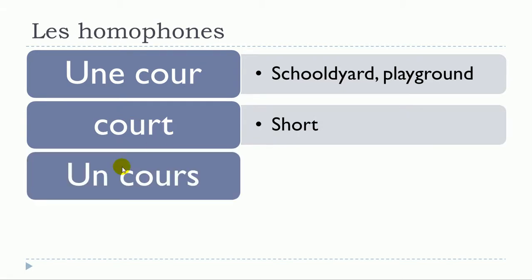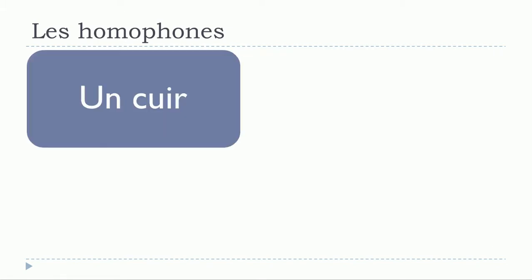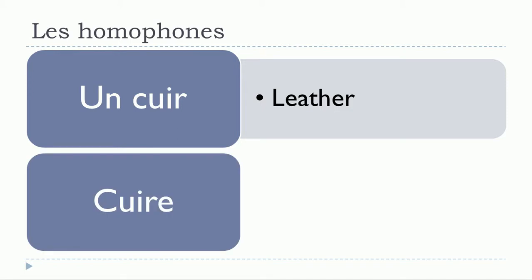And after that, cour and then court. I can see that here you get a feminine, une cour, then you get the adjective court, and the verb cuire, and then cuir.